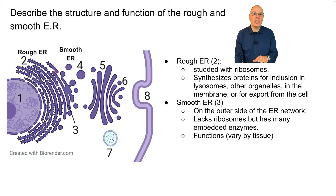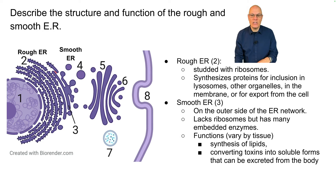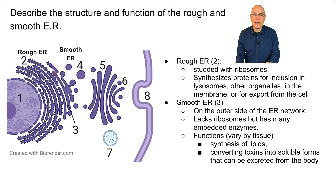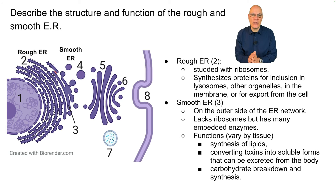The functions of the smooth ER vary by tissue, and can include synthesis of lipids, converting toxins into soluble forms that can be excreted from the body, and carbohydrate breakdown and synthesis.